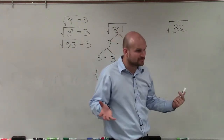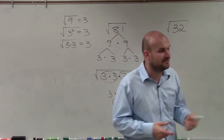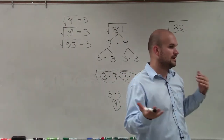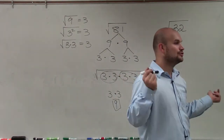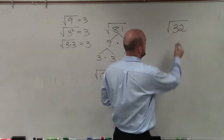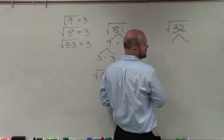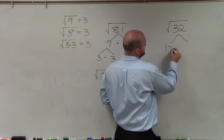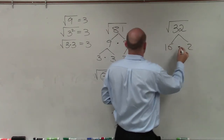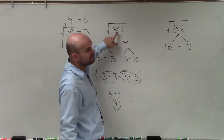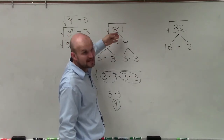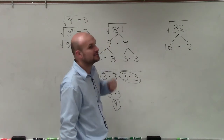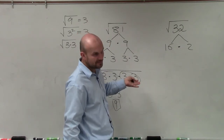But if, let's say, you can't figure it out but you know it's even — if a number is even, you can always divide it by 2. So if you get stuck, I would always look to divide it by 2. If it's odd, always look to divide it by 3, or 7 is another good one. If it ends in a 0 or a 5, then you want to try looking at dividing it by 5.